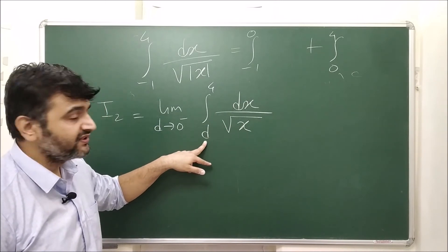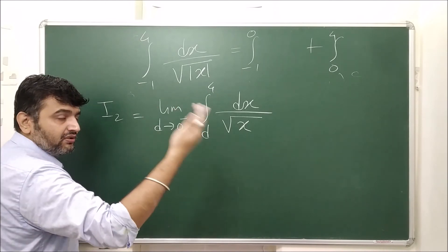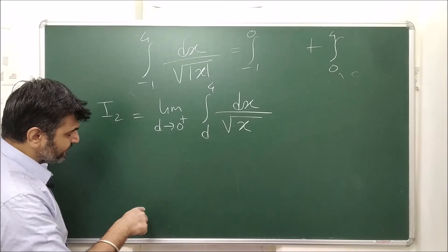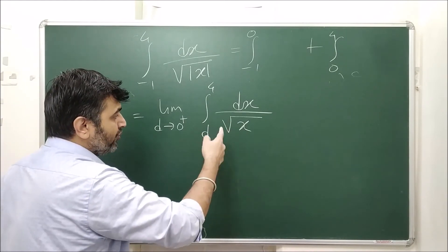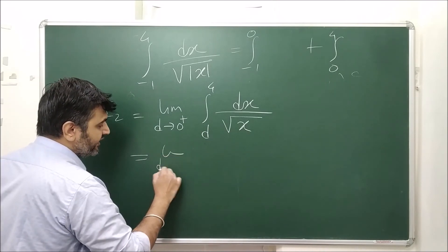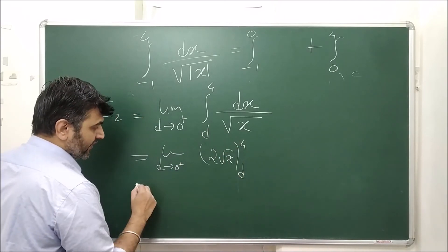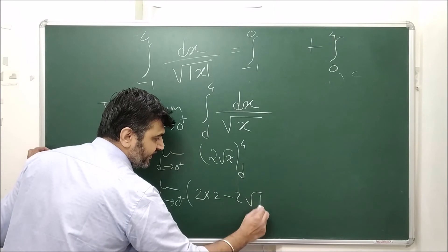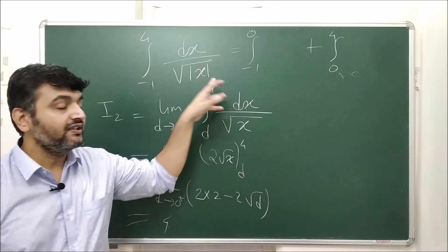For I2 (0 to 4), remove 0 by introducing d approaching 0+. Since x is positive here, |x| = x, and integrating gives 2√x from d to 4. Taking the limit as d → 0+: this is 2(2) − 2√d = 4. So I1 + I2 = 2 + 4 = 6, and this integral converges to 6.